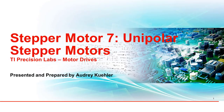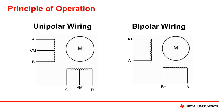Welcome to the seventh chapter in the TI Precision Lab series on stepper motors. My name is Audrey Keeler and today I will discuss the basics of unipolar stepper motors. There are two types of stepper motors, unipolar and bipolar, which differ based on the presence of a center tap and the current flow direction. We will cover their construction and operation later on in the video.